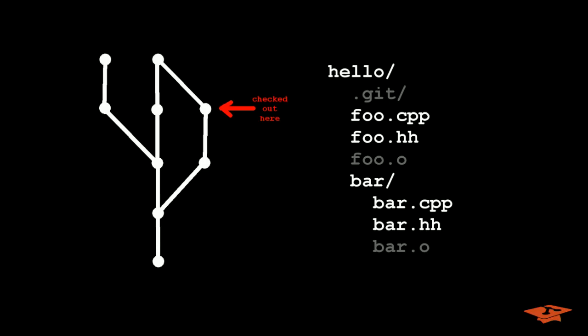Git stores its entire history in the hidden .git folder at the top of the repo. You have to whisper because it's hidden. Don't edit those files, okay?